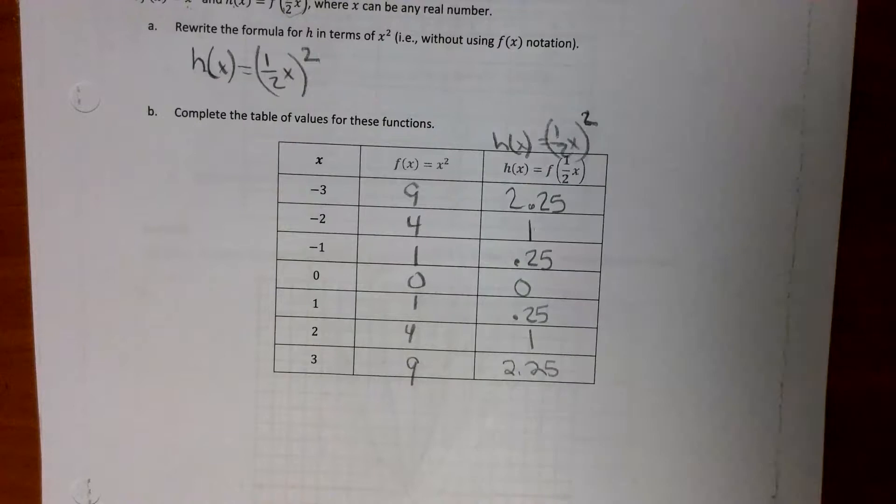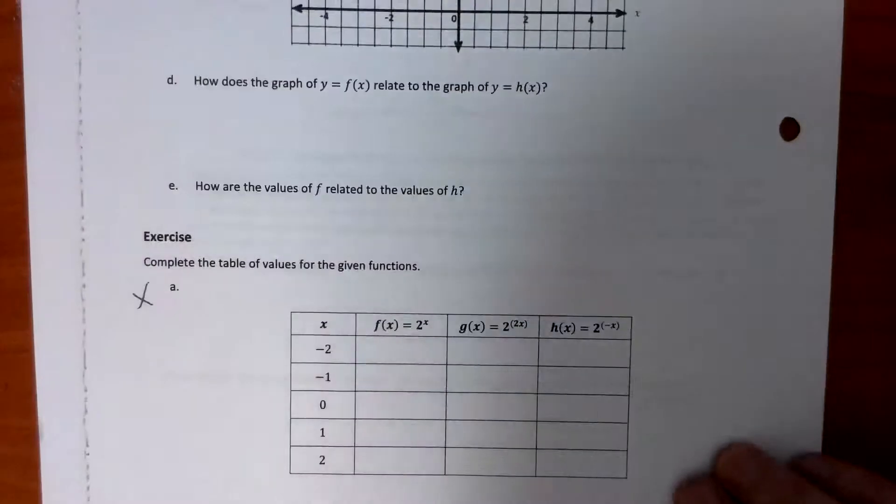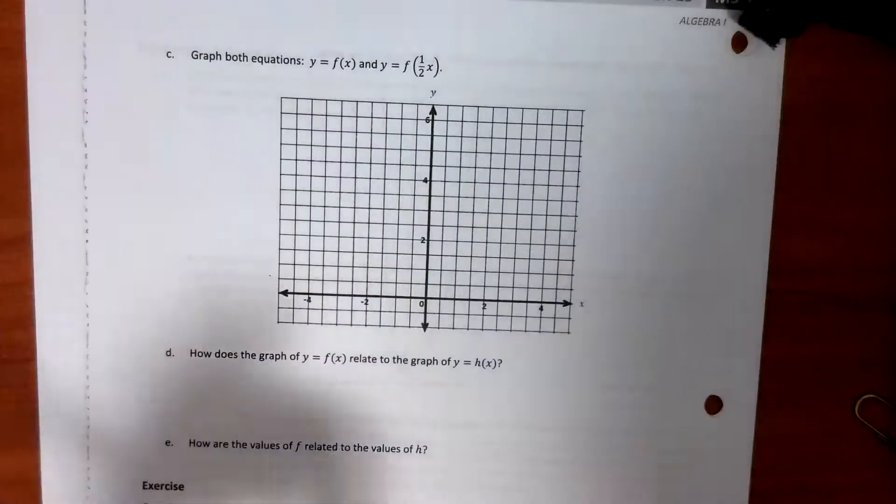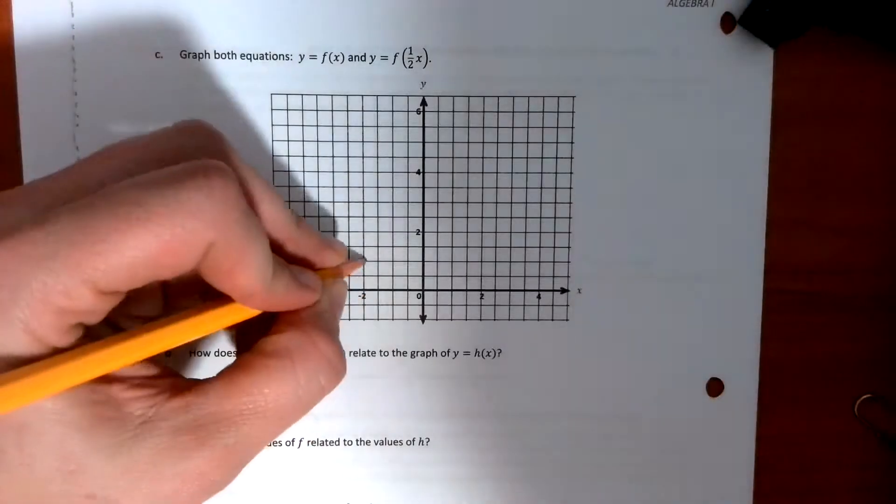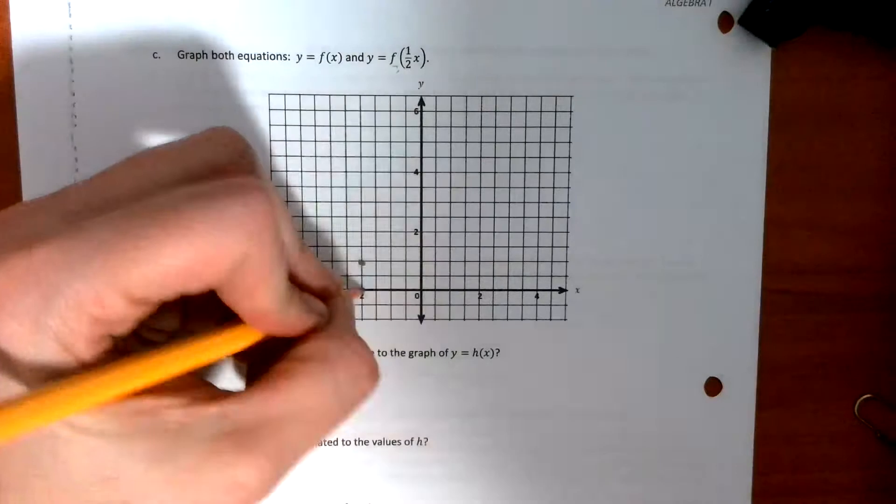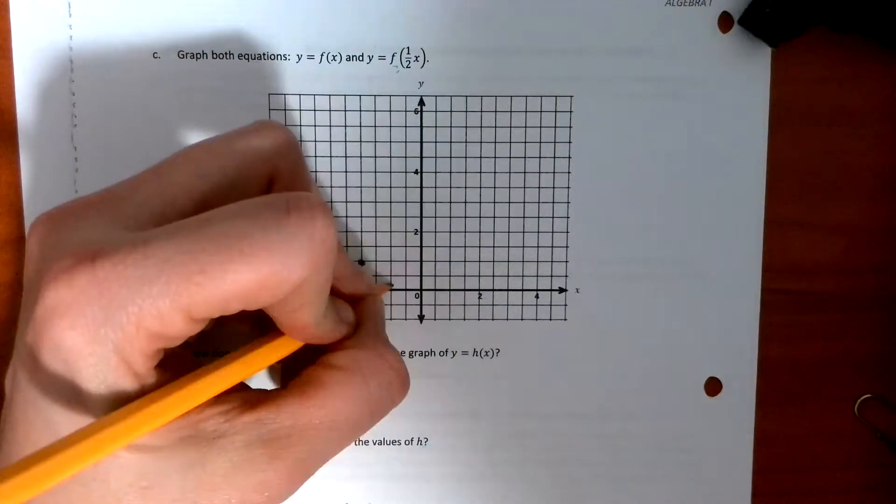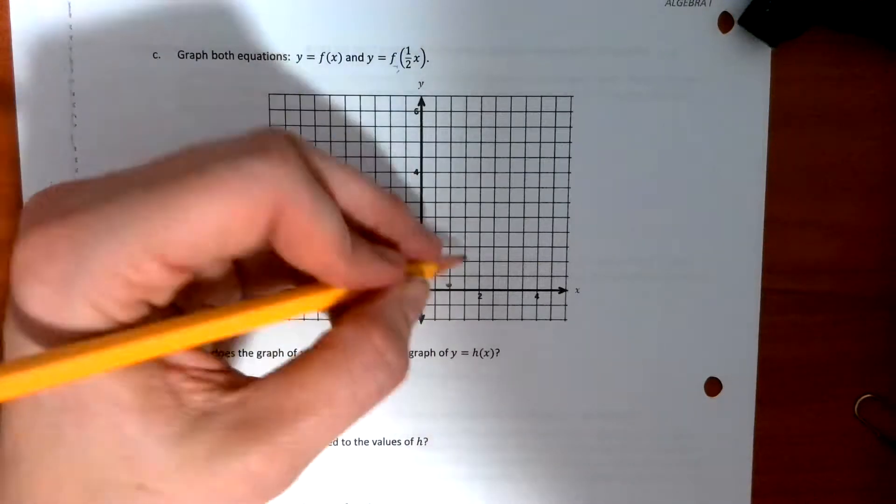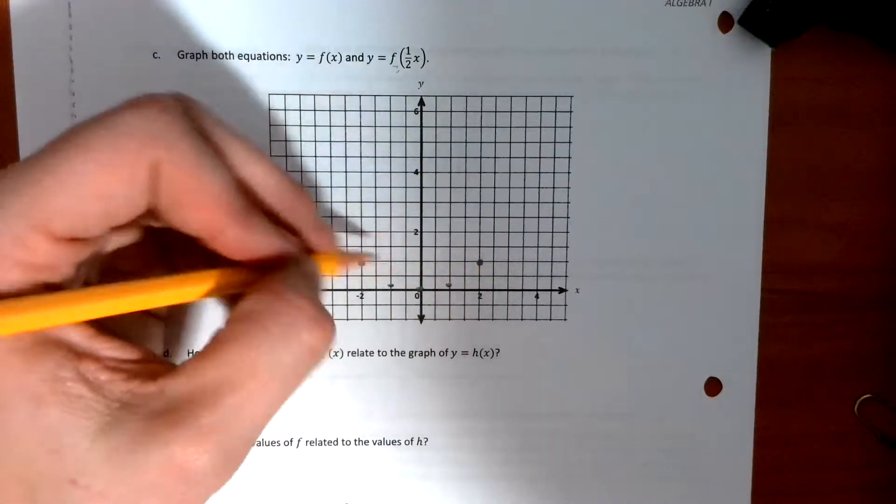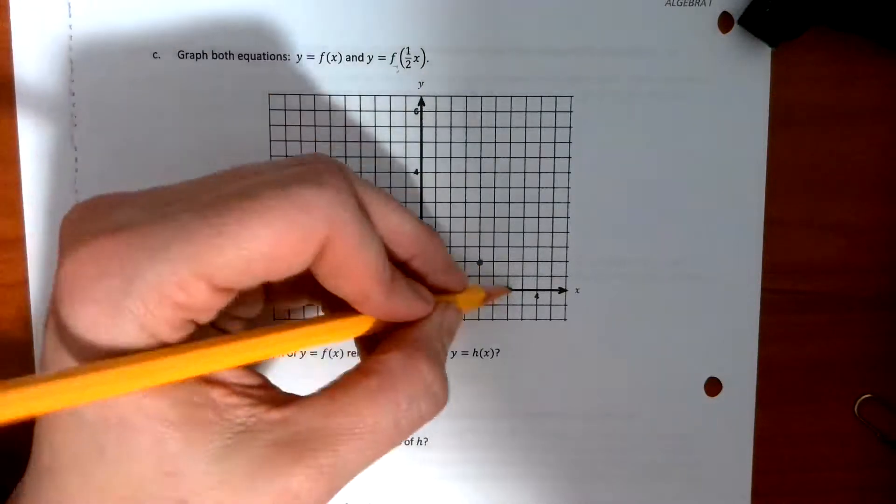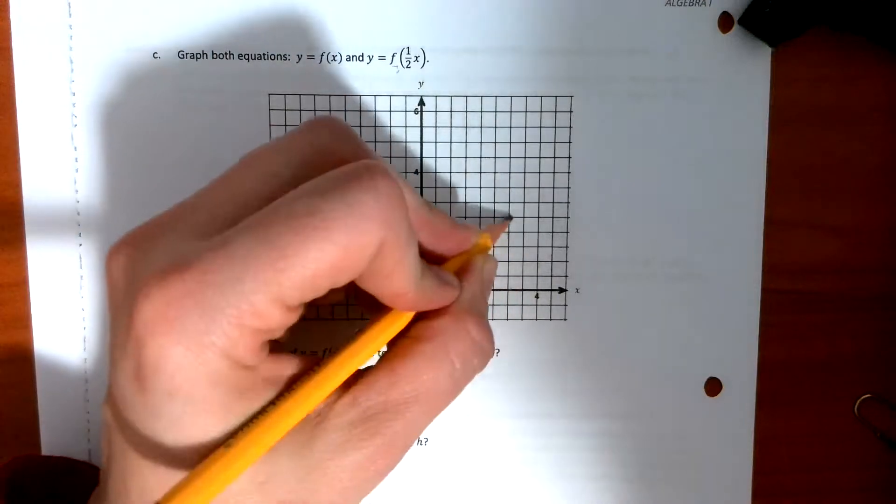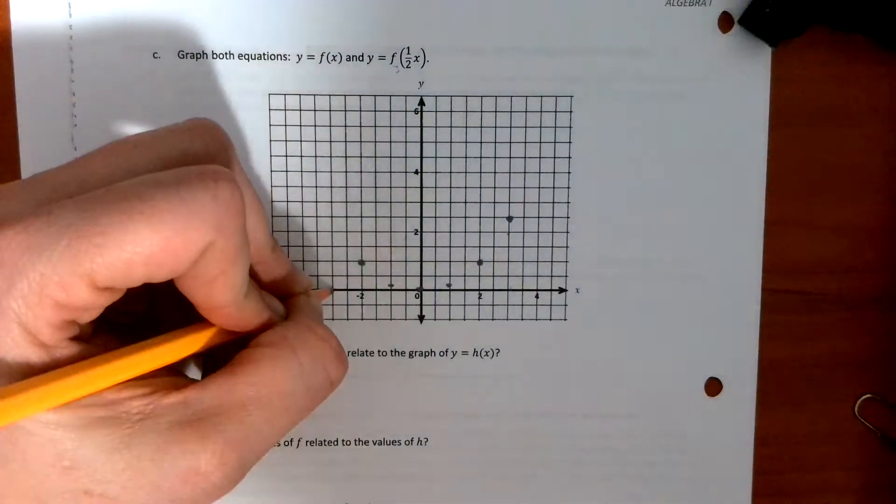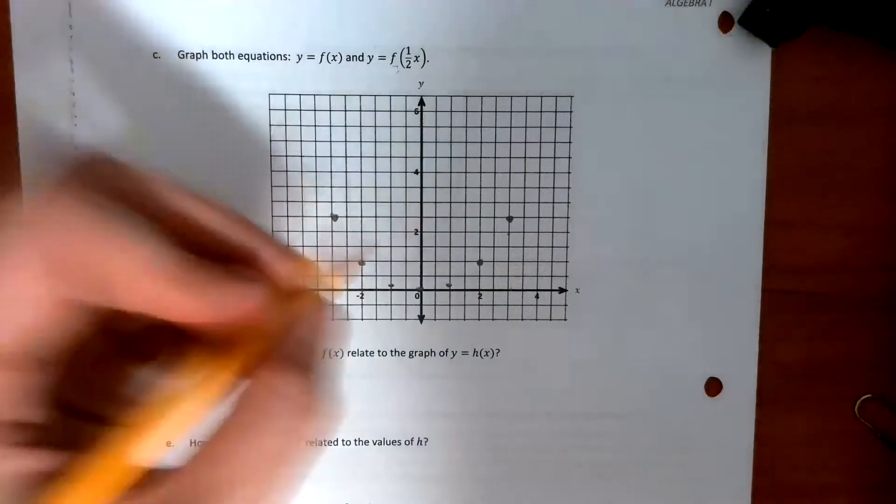Now we have to graph these two equations. So having the graph paper is always handy. But here we go. All right. I still have the other one on my calculator. So we're going to graph the second one first. So we go 2, 1, negative 1, a quarter, 0, 0, 1, a quarter, 2, up 1, and then 3, up 2, and a quarter. And we still have the 3 from the first one, the negative 3, 2, and a quarter.